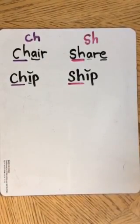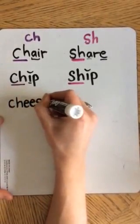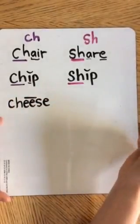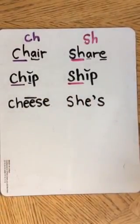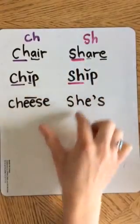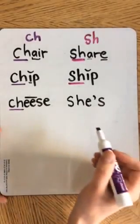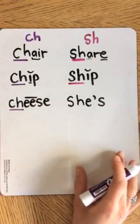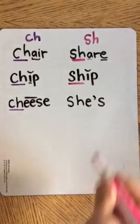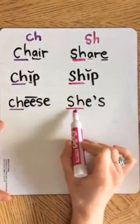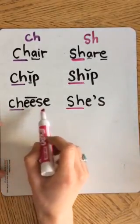Now let's take a look at CHEESE. There's a long E there. We're only looking at words that have the beginning sound as the digraph. There are a bunch of different kinds of cheeses, like American, cheddar. Maybe you like them on enchiladas. And then we have SHE'S — like saying, she's going to do something, she's going to the store.